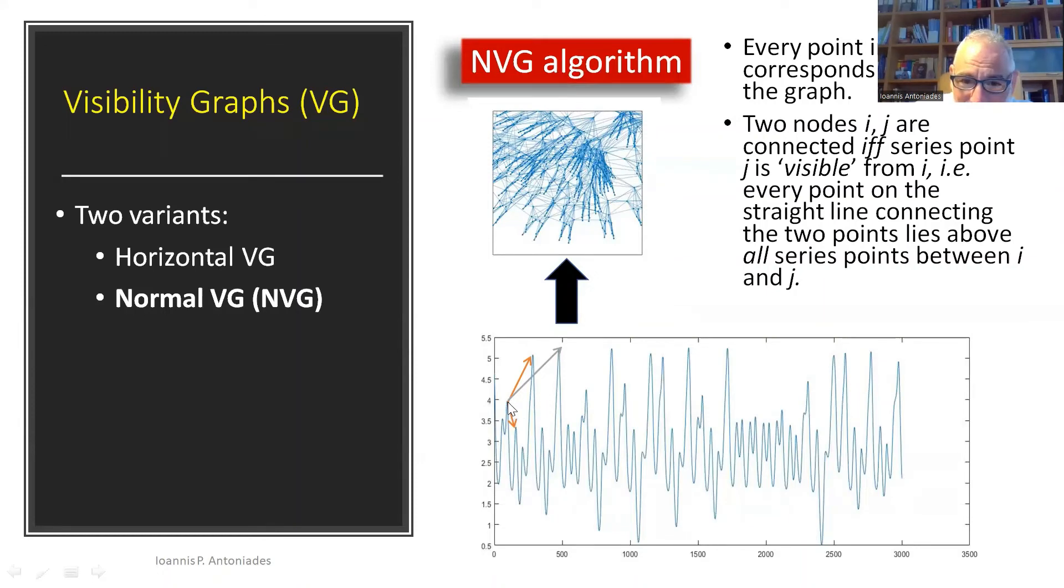So for instance, you look at this series point and this one. If you connect them by a straight line, all intermediate time series points lie below the line. So they're visible and they will be connected in the resulting graph. Now, these two points will not be connected because they're not visible from each other because you can see an intermediate series point. This one here lies above the straight line connecting them. So this is the way you create the visibility graph.